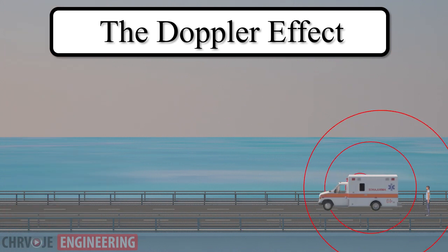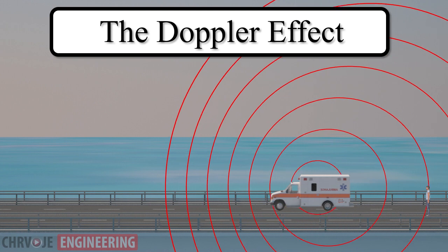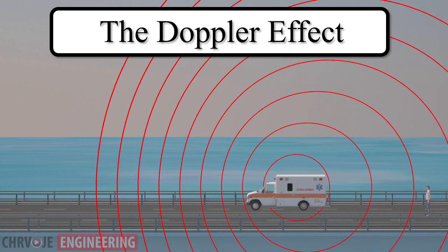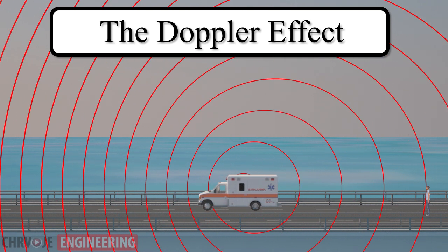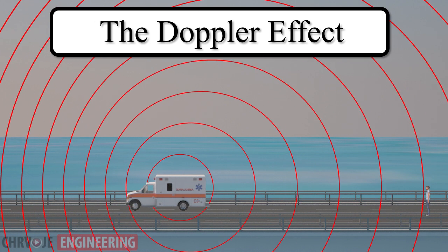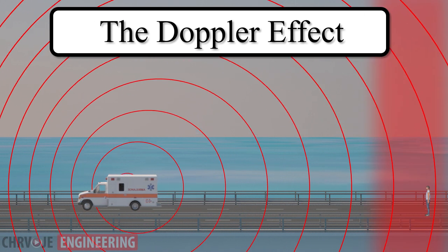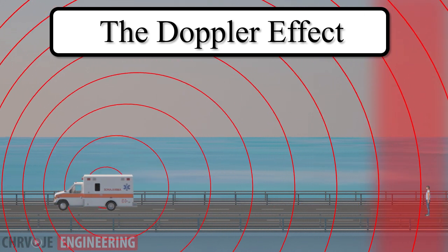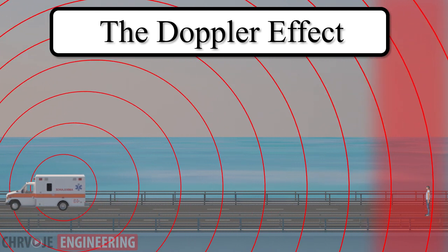As the emergency vehicle passes by and moves away, the sound waves of the alarm are widespread. In this way, the frequency of the wave is decreased, resulting in the alarm being heard less and less from the observer's point of view.